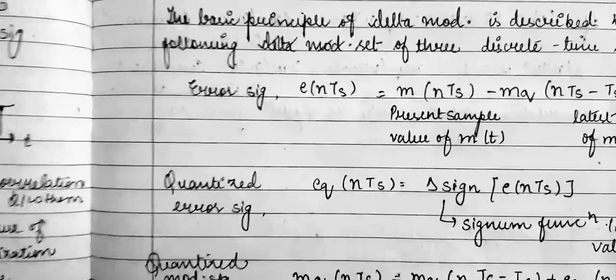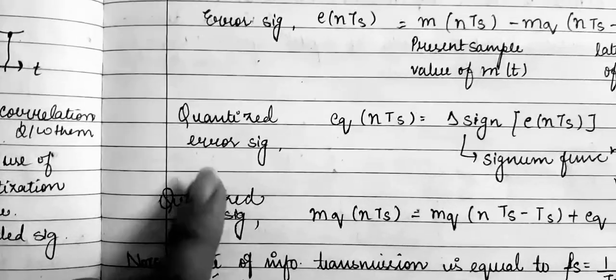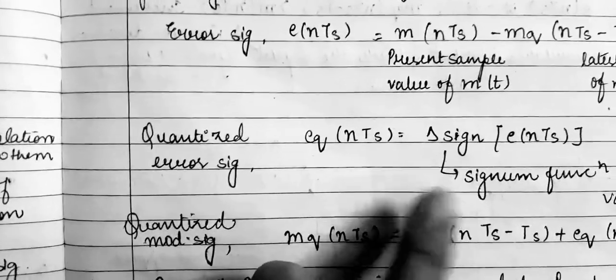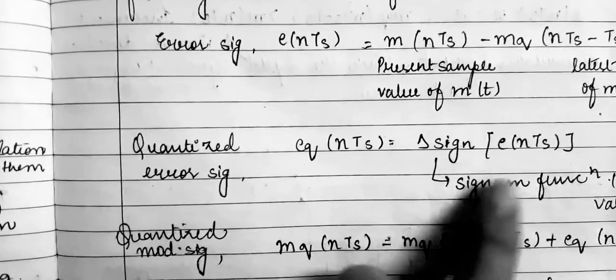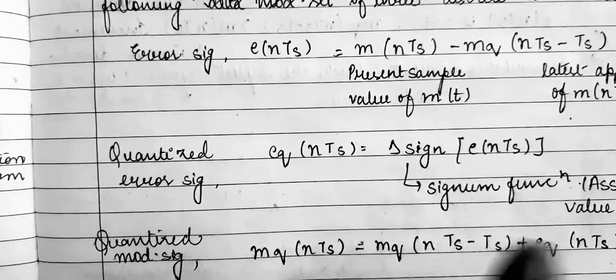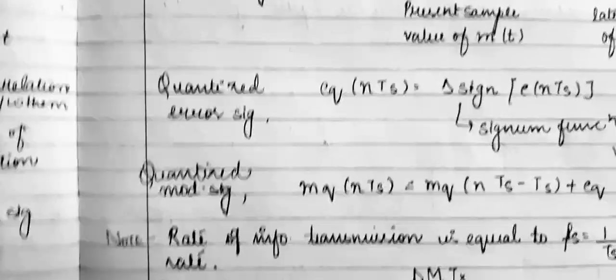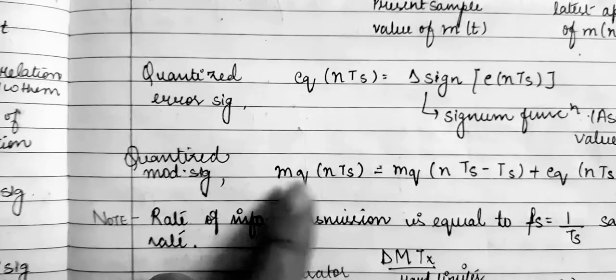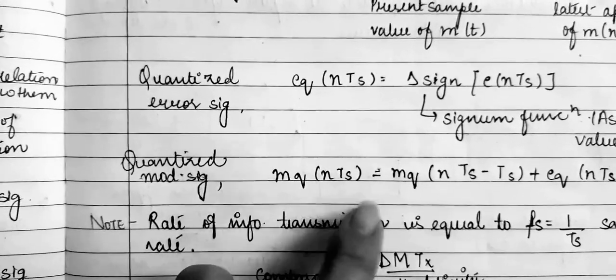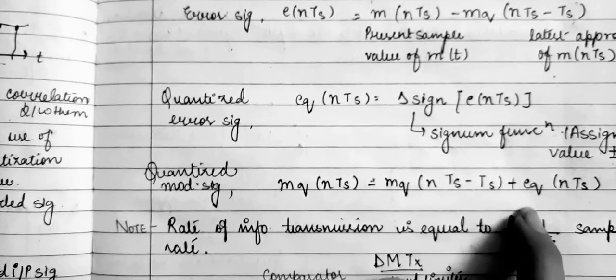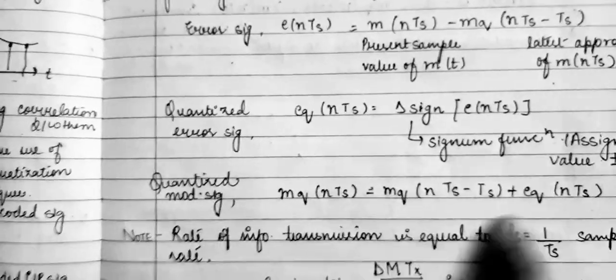The second relation is the quantized error signal, represented by eq(nTs): eq(nTs) equals delta times the signum function of e(nTs). The signum function assigns plus or minus one values. The third relation is the quantized modulating signal mq(nTs), which equals mq(nTs minus Ts) plus eq(nTs).